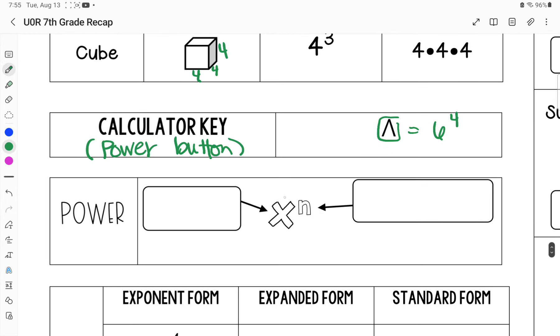So this whole thing is called a power. And any power, you can break it down to our base number. So the big one, the one that's written large, is our base number. And our little one here, in this case, that would be our exponent.